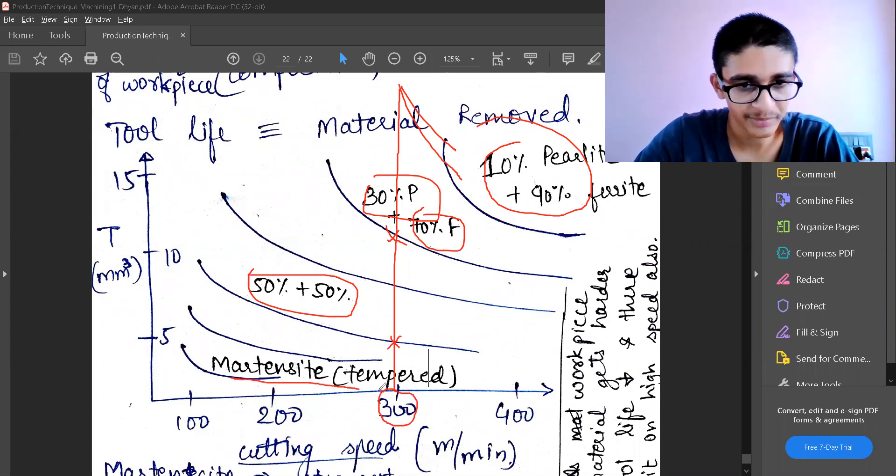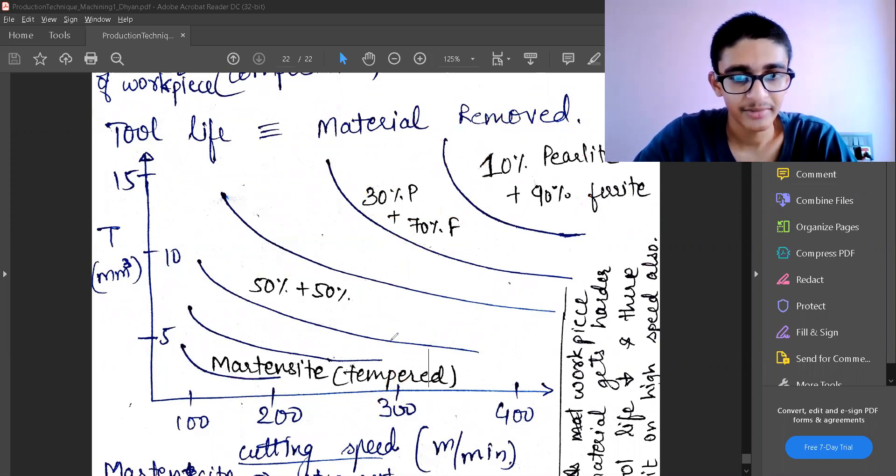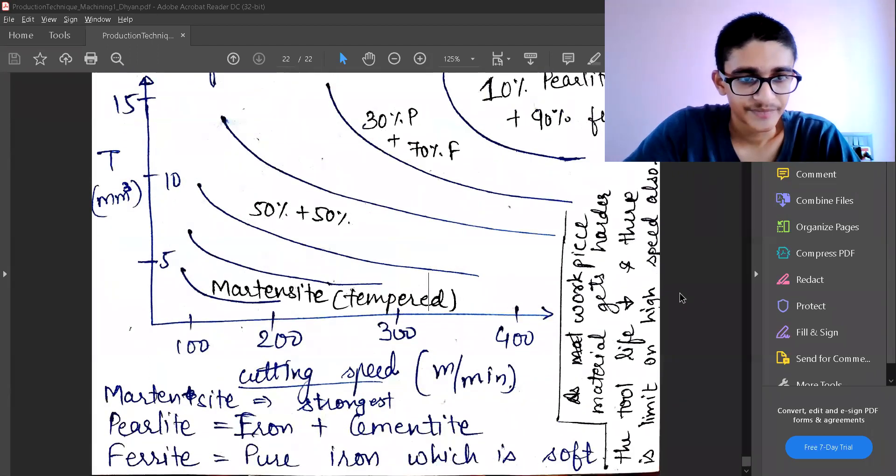And when I'm going to use martensite, I am going to have further smaller tool life. So this is how we can see the effect of different material properties. Martensite is the strongest, so when I'm going to use the strongest material in the workpiece, my tool life is going to decrease.